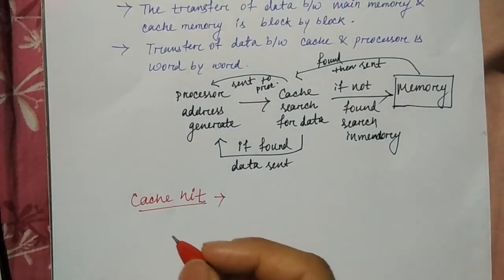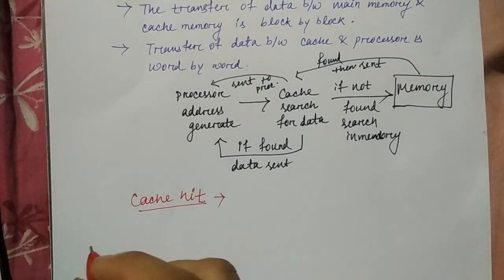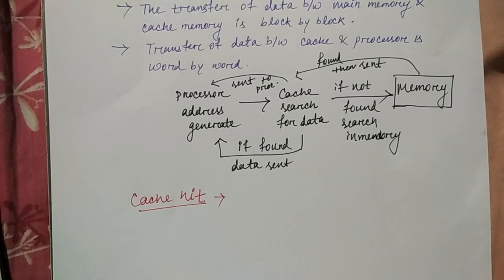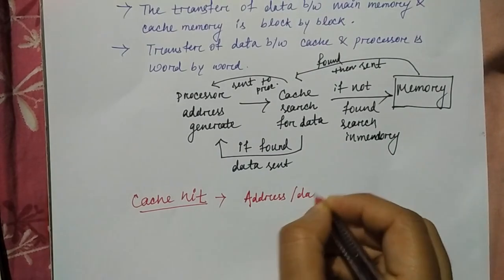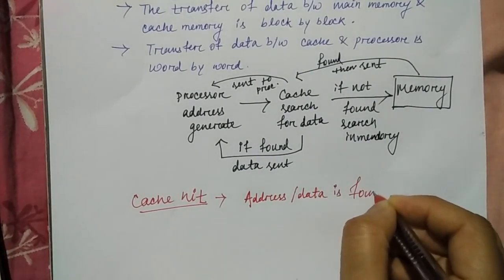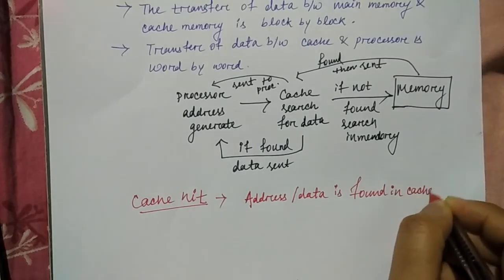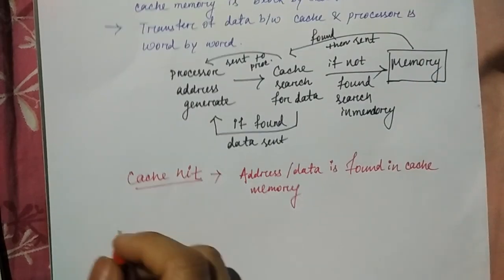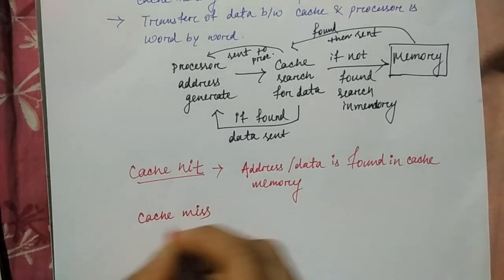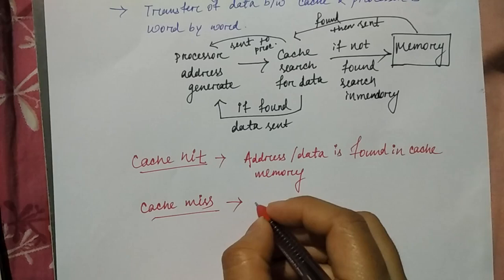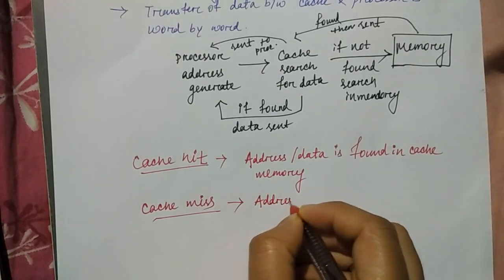When the processor is searching for an address in the cache memory and the address is found in the cache memory, that is called a cache hit. When the address or data is found in cache memory, that is called a cache hit. If the address or data is not found in cache, that is called a cache miss.